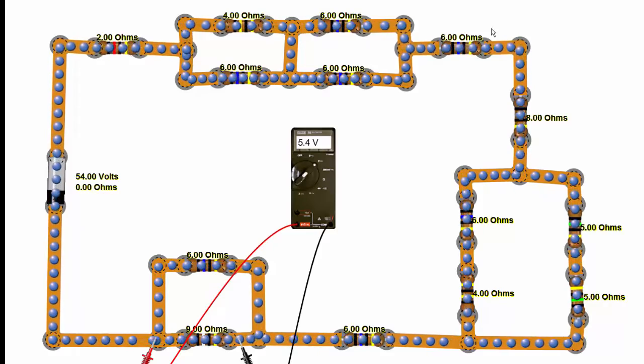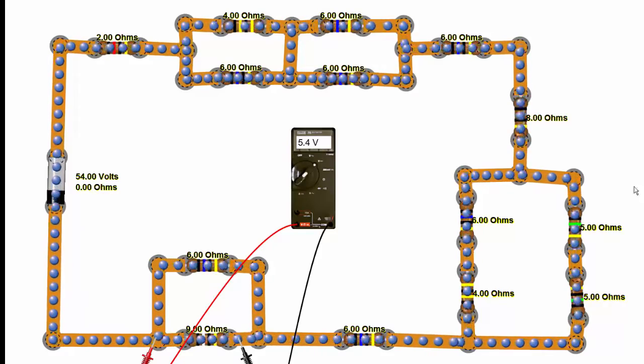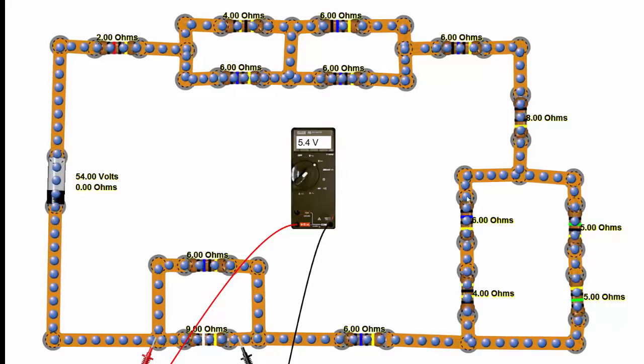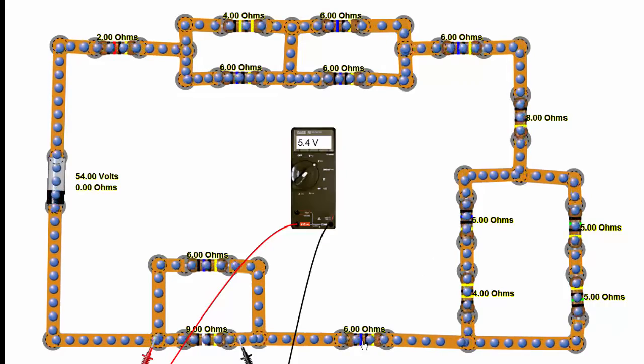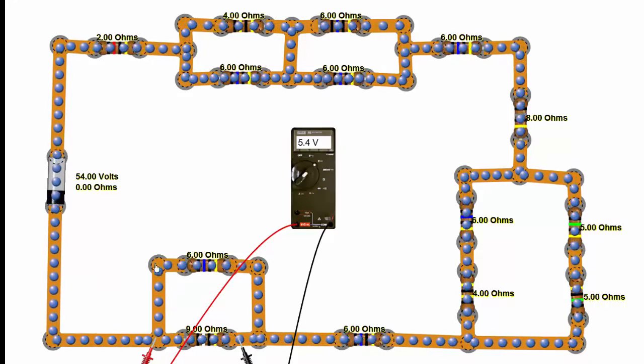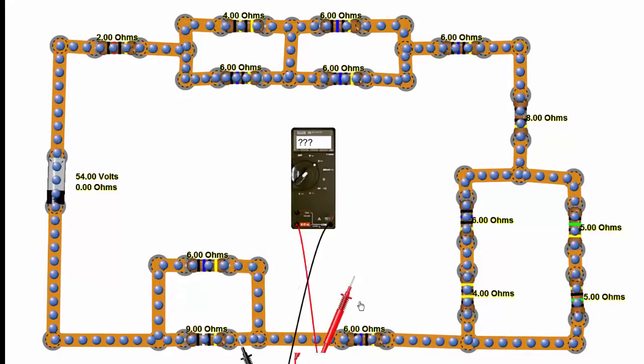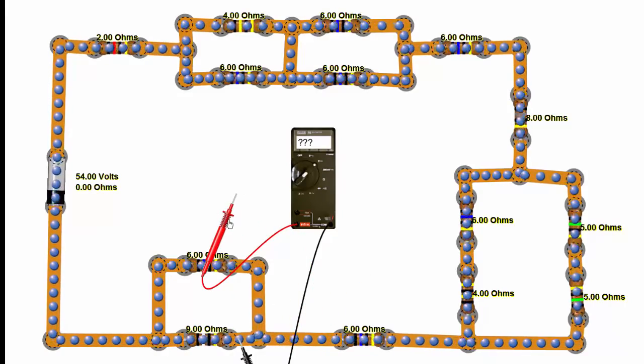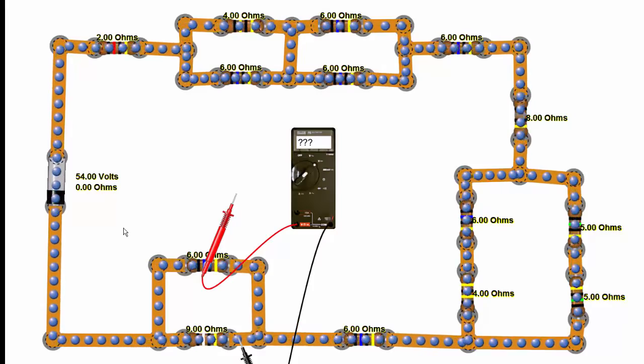The 6-ohm, the 8-ohm, all these resistors, this one, the 6-ohm, and the 6 and the 9-ohm, and those voltage drops ought to add up to 54 volts. That's what we call Kirchhoff's Voltage Law.